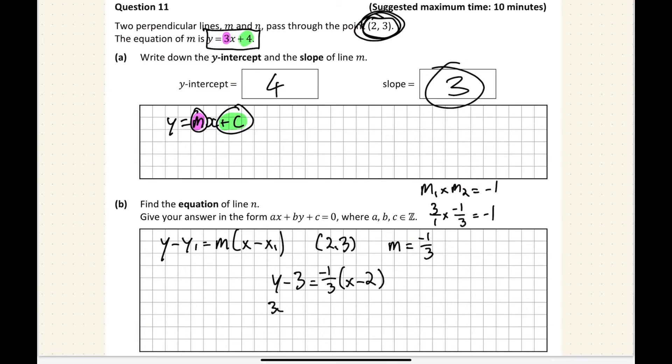So if you multiply the left by 3, you get 3y minus 9 equals minus x plus 2. All right. So then just tidy it up so that it's in this form here. So this becomes x plus 3y minus 11 equals 0. And that is the equation of the line n.